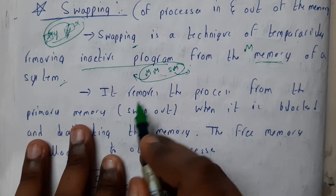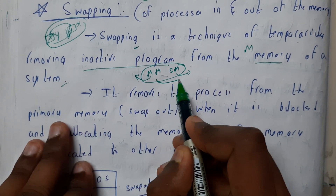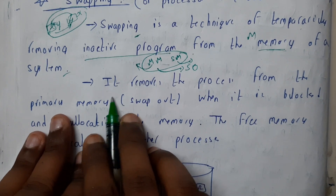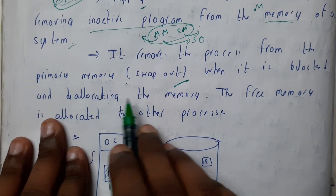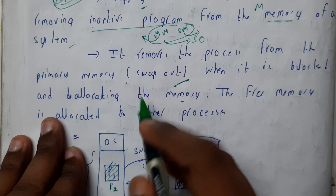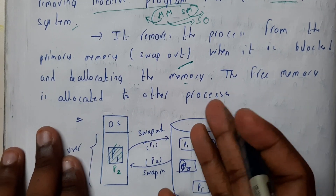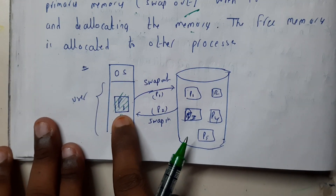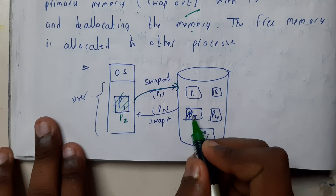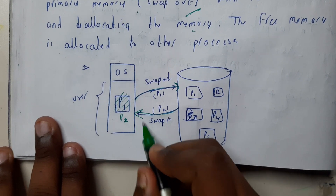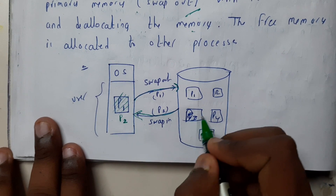If there are any inactive or unused programs, we can remove them from the primary memory — this is called swap-out. When a process is blocked and deallocated, the free memory is allocated to some other process via swap-in. For example, initially P1 is in memory; as P1 is inactive, it is swapped out, and P2 or P3 is swapped in for execution. The vacated P1 position becomes a hole — an empty memory location.